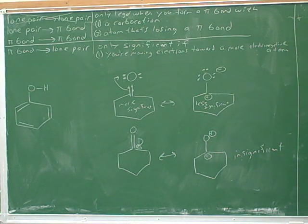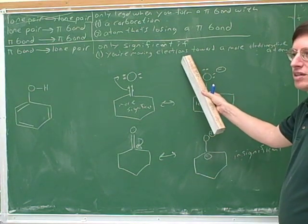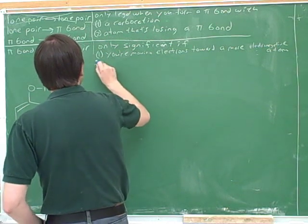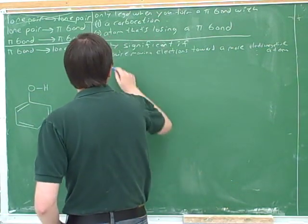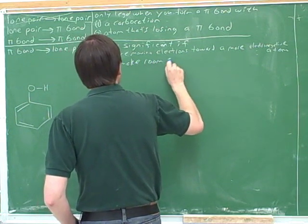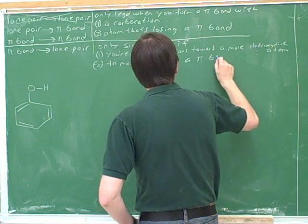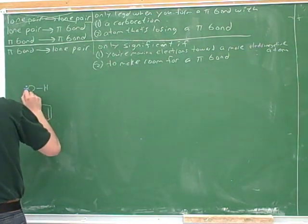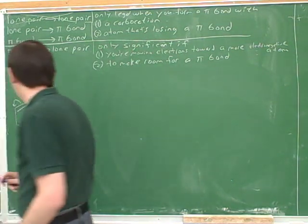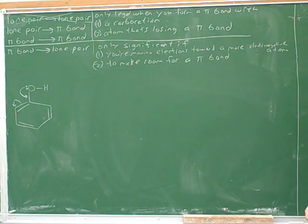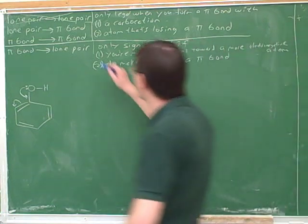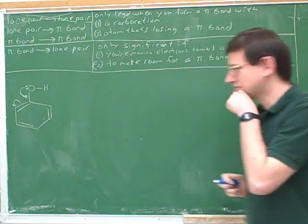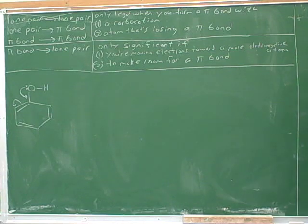So we can start to see there are some subtleties here. Here's one way to tell whether you're making a significant error when forming a lone pair. There's one other way you might want to form a lone pair: it's also significant to form a lone pair to make room for a pi bond.